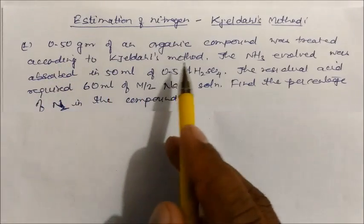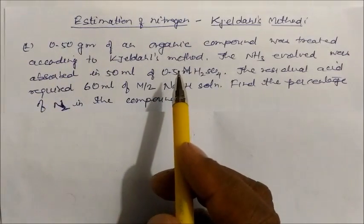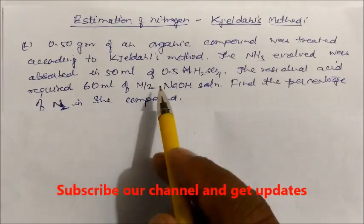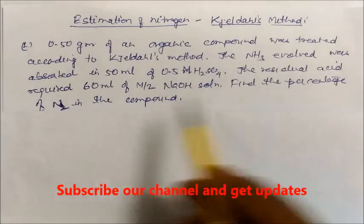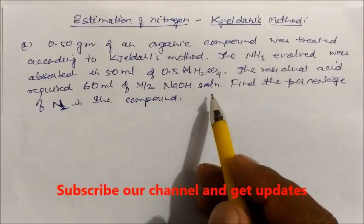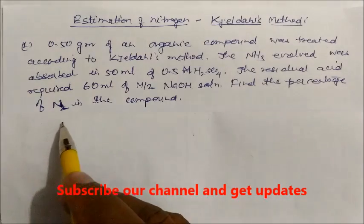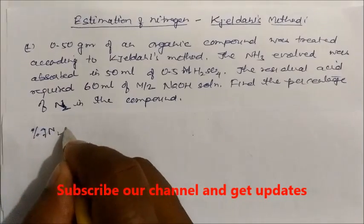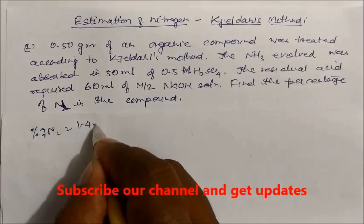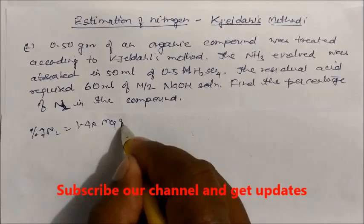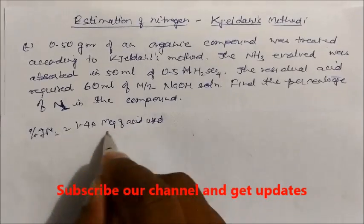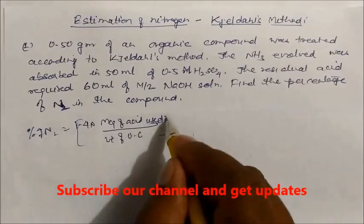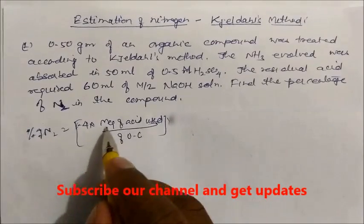Question 1: 0.5 gram of an organic compound was treated according to the Kjeldahl method. The ammonia evolved was absorbed in 50 ml of 0.5 molar H₂SO₄. The residual acid requires 60 ml of M/2 sodium hydroxide solution. Find the percentage of nitrogen in the compound. To find the percentage of nitrogen, we use the formula: 1.4 × milliequivalents of acid used, divided by the weight of organic compound, multiplied by 100.